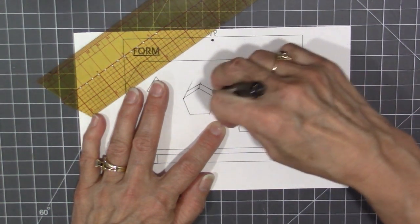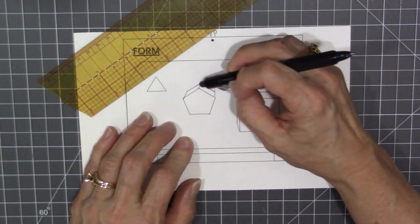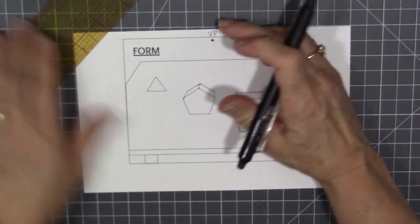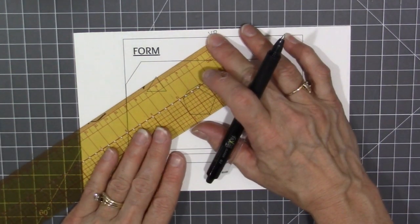Erase the extra vanishing lines and then move on to the next shape that's a triangle.